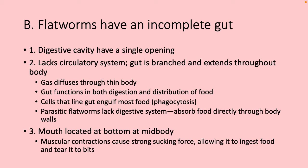Flatworms have an incomplete gut — a digestive cavity with a single open end, no circulatory system. But this gut is branched, extending throughout the body so that gas can be diffused and food distributed. Cells lining the gut perform phagocytosis to bring in nutrients. In parasitic flatworms, they lack the digestive system because they feed off their host — they're basically a vacuum taking in everything from within the host's digestive system.